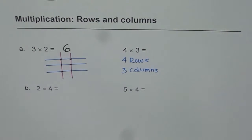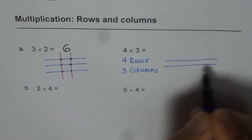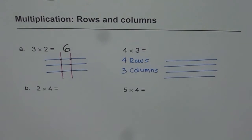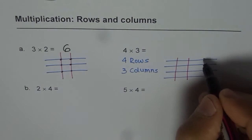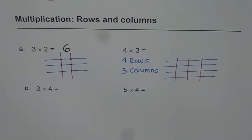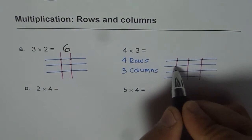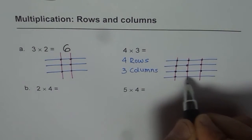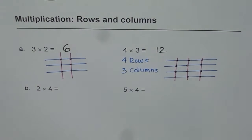So, let us draw 4 rows. First, these are my 4 rows, 1, 2, 3 and 4. Let me draw columns in red, 3 columns, 1, 2, 3. At how many places do they cross? Let us count. 1, 2, 3, 4, 5, 6, 7, 8, 9, 10, 11, 12. So, we get 12 as our answer.